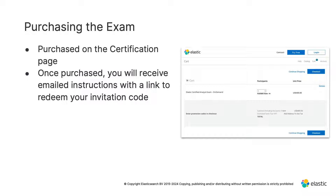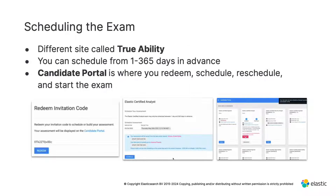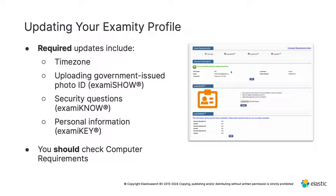The email will include a link to redeem your invitation code. Clicking that redemption code takes you to a different website called trueability.com, where you will choose your day and time from 1 to 365 days in advance. Once you schedule, you will be brought to the TrueAbility candidate portal where you can see your scheduled exams, update your Examity profile, start your exam, or reschedule. You should update your Examity profile before starting, including updating your time zone, since a proctor is assigned to the exam.